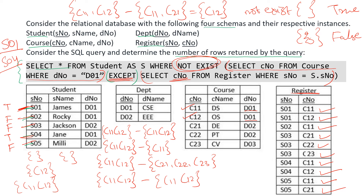So only for two students — S01 and S04 — we got true, meaning the inner subquery produced an empty set and NOT EXISTS returned true. These are the two students that will be included. The number of rows returned will be 2: S01 James D01, and S04 Jane D01. So the answer for this question is 2.